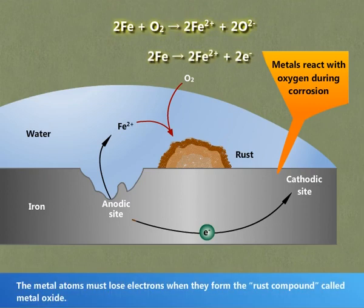The metal atoms must lose electrons when they form the rust compound called metal oxide. This indicates that corrosion is an oxidation reaction.